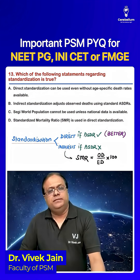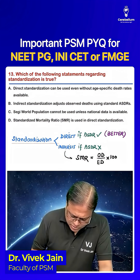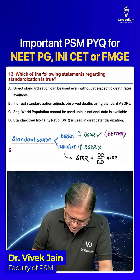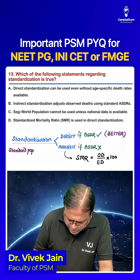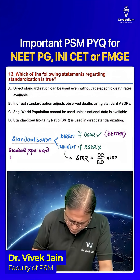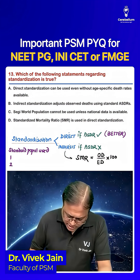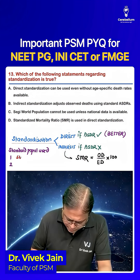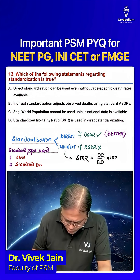For indirect standardization, we use standard populations in the world. The two standard populations used are the SEGI population and the standard European population. You have to remember these names.